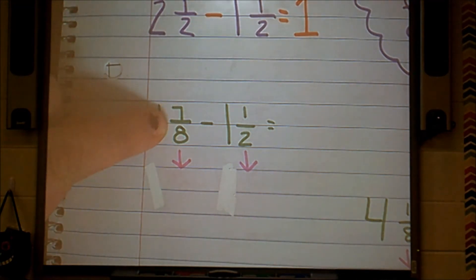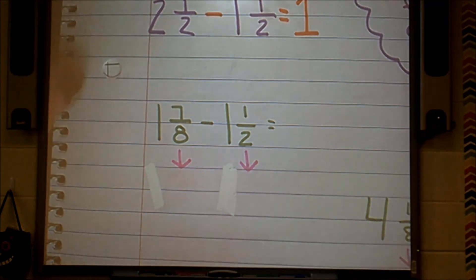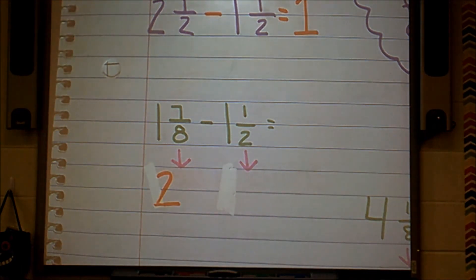7 eighths is closest to 1 whole. So I'm going to take that 1 whole and I'm going to put it with my other 1 whole that I have here to give me 2 whole, to give me 2.